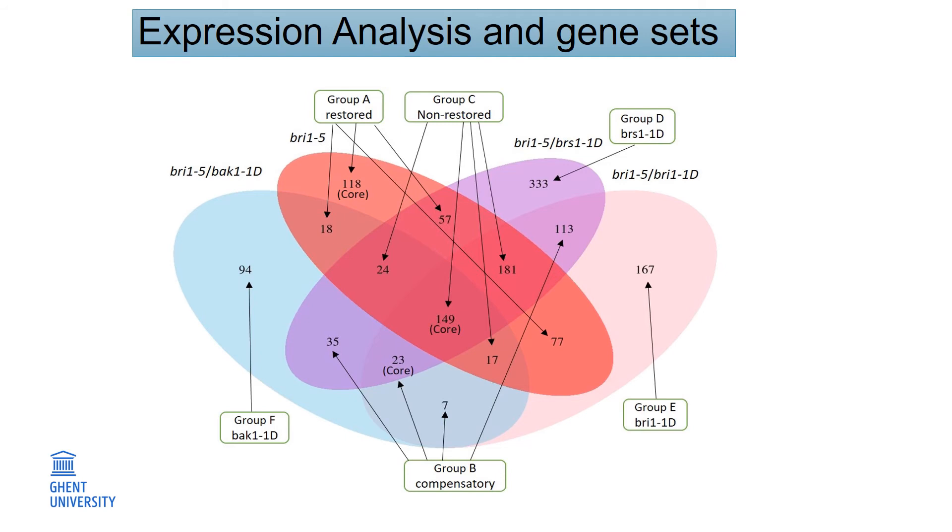And here is the intersection result of the differential expression genes between BRI1 and three suppressor lines. And then we define the gene groups. The idea is, if the suppressor line could restore the phenotype of the BRI1, they could do so either by restoring the genes that are differentially expressed in BRI1, or they employed new genes that are not being differentially expressed in BRI1.